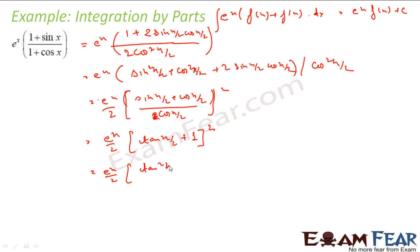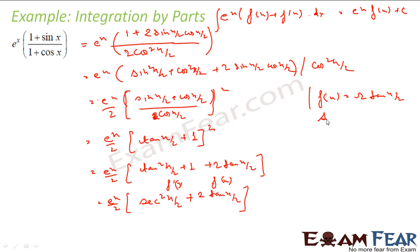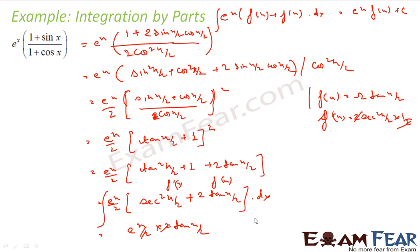This is tan²(x/2) + 2tan(x/2) + 1, which equals [tan(x/2) + 1]². Now f(x) = tan(x/2) and f'(x) = sec²(x/2)·(1/2). So the integral becomes eˣ · (1/2) · 2·tan(x/2) = eˣ·tan(x/2) + C, after canceling the factor of 2.